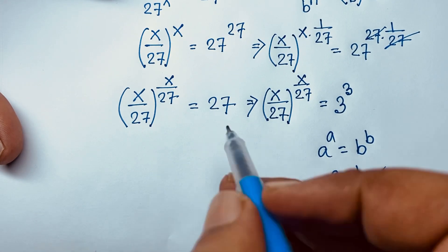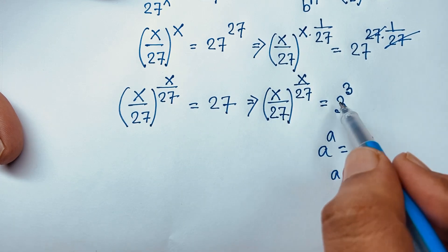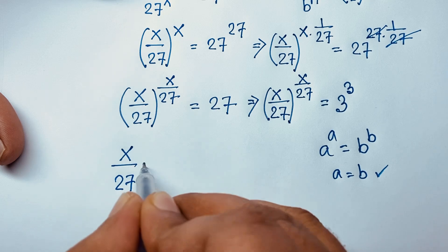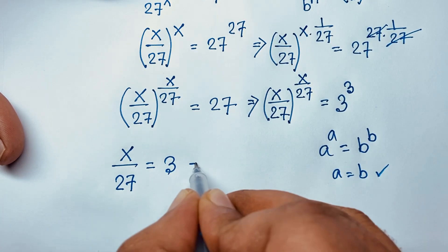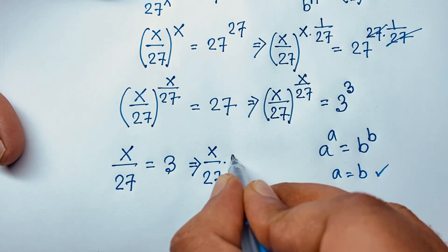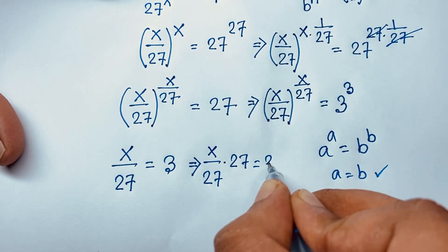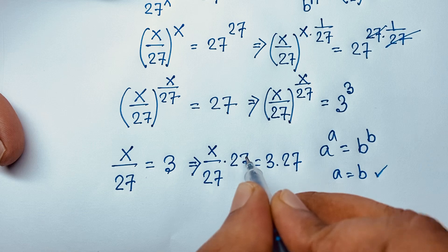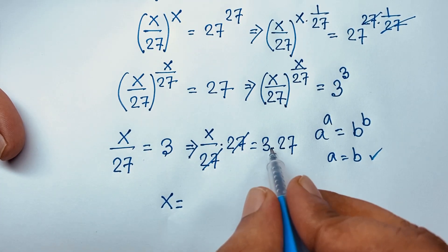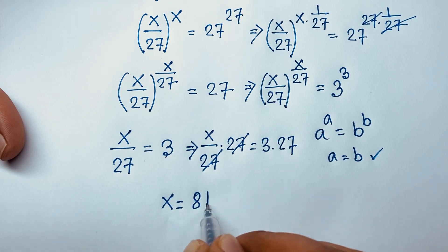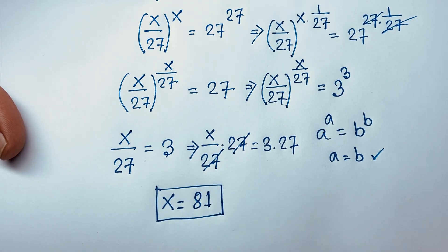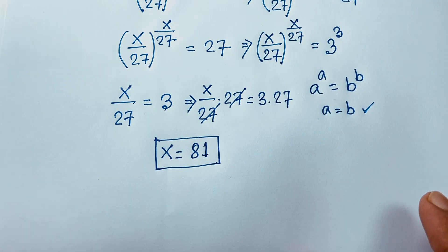According to this formula, since this equals this and this equals this, we have x over 27 is equal to 3. Then multiplying both sides by 27: x over 27 times 27 equals 3 times 27. The 27s cancel and we find x is equal to 3 times 27, which is 81. So this is our final answer.